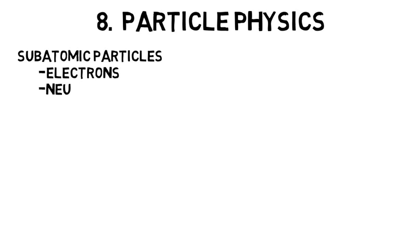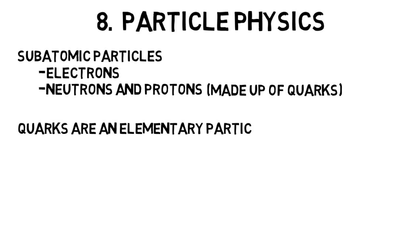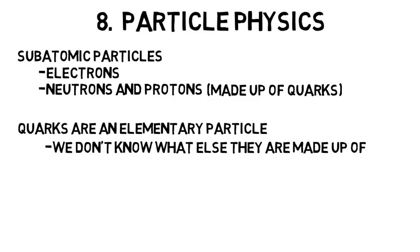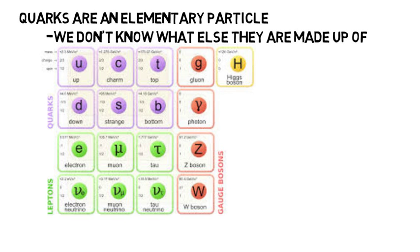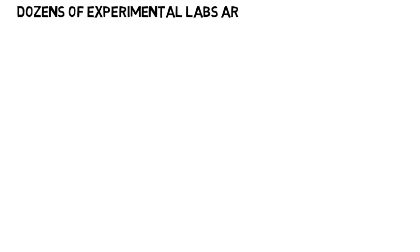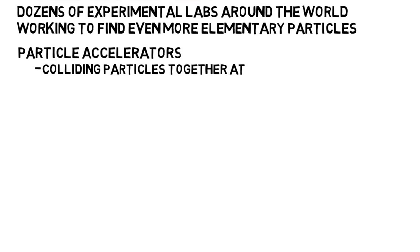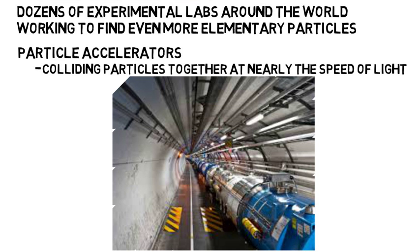And lastly, we have particle physics. Modern research in this field consists mostly of subatomic particles, or particles much smaller than atoms, like electrons, then also neutrons and protons, which themselves are made up of quarks. Quarks are an elementary particle, which means we don't know what else they are made up of. But there are other elementary particles besides quarks we've discovered. The most recent one found you may have heard of is the Higgs boson. Currently, there are dozens of experimental laboratories around the world that are working to find even more elementary particles that make up our universe by using particle accelerators and colliding particles together at nearly the speed of light, like the Large Hadron Collider in Switzerland.